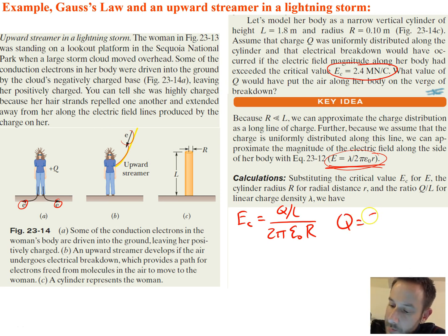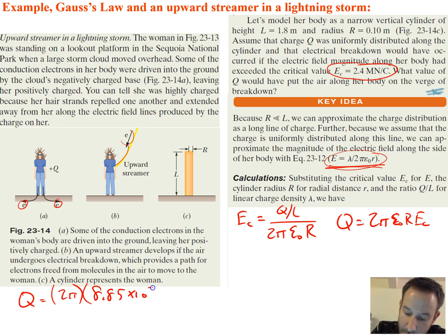Rearrange this for Q, because that's what we're trying to solve for. It's just going to get 2π epsilon naught times big R times E_C. Now we want to plug everything in, all of our values. So Q is going to be equal to 2π times epsilon naught, so 8.85 times 10 to the negative 12 coulombs squared divided by newton meter squared, times our radius, which is 0.1 meters, times our length, which is 1.8 meters.